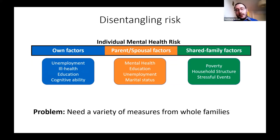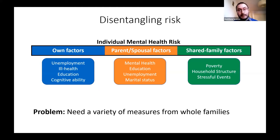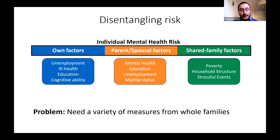The problem is that doing this kind of partitioning needs a lot of data, both in terms of the variety of measures required — we need something about the family, about the socioeconomics of the family, and about the health of each family member — and also a large volume and complexity in order to properly recreate the family units we're trying to look at.